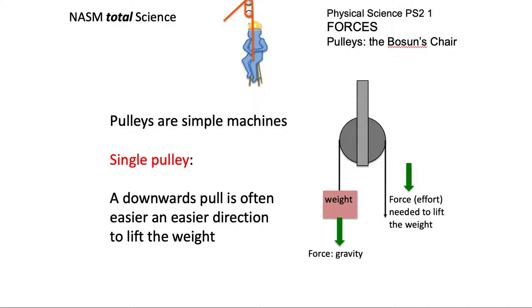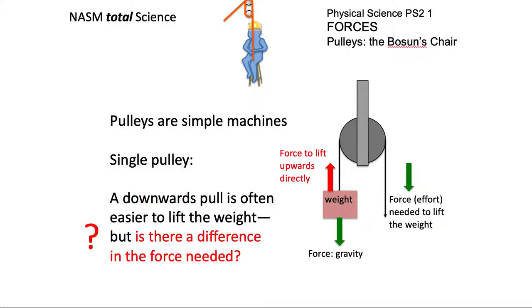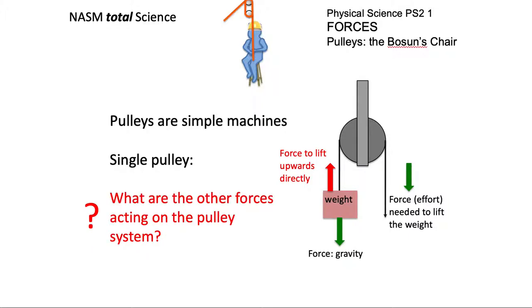The downwards pull is often easier, but is there a difference in the force needed? What other forces are acting on the pulley system? The effort to pull down and the force to lift it up directly against the force of gravity. There's friction over the pulleys, there's tension on the rope.